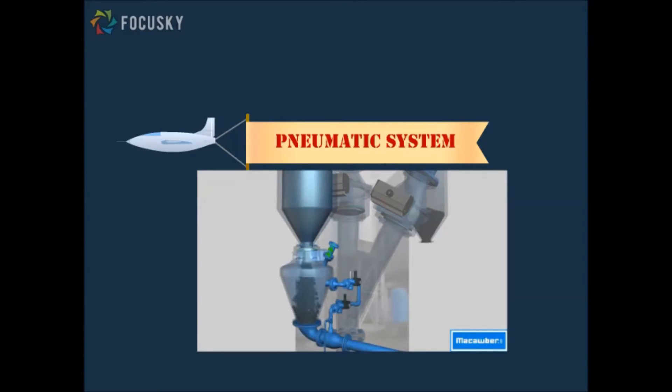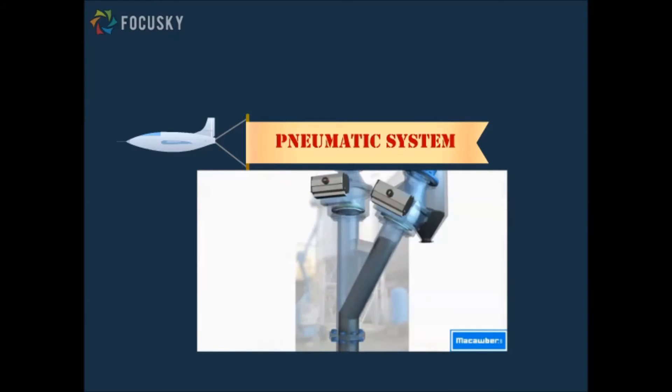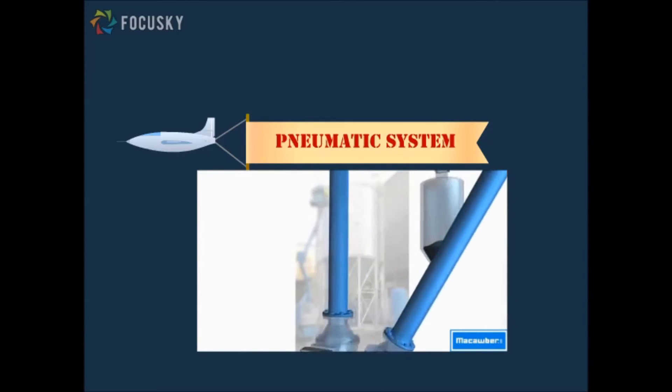Another element to be considered in the pneumatic transport system is the pressure drop. Accurate prediction of pressure drop across the transport system is essential to ensure smooth transport flow. The pressure drop in the system is dependent on particle and pipe diameter.